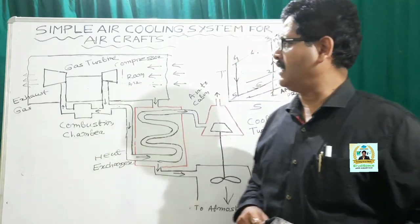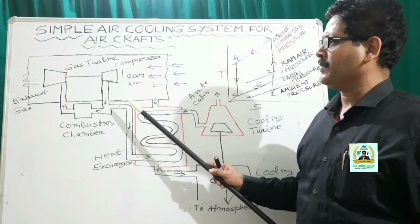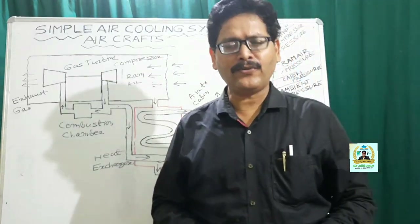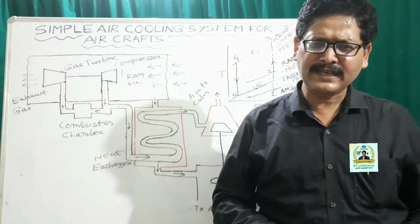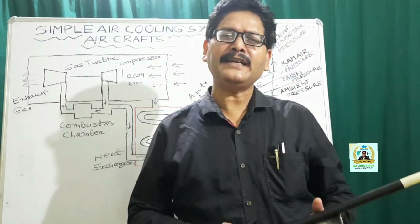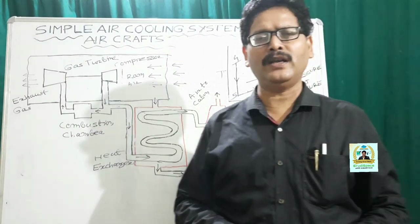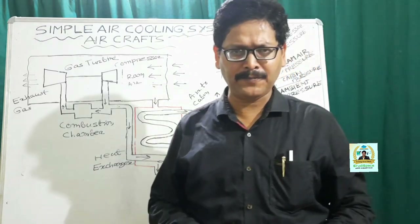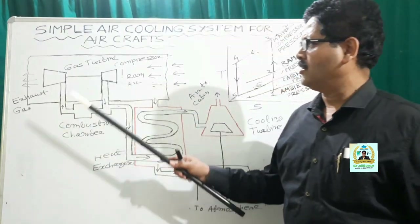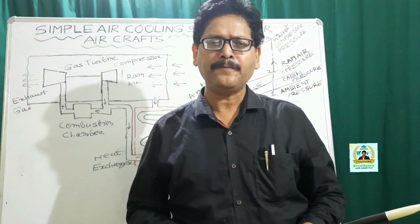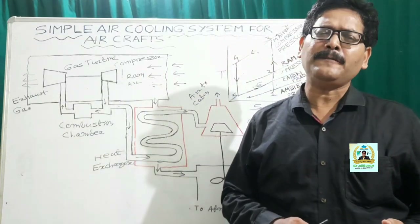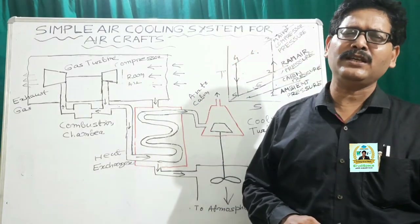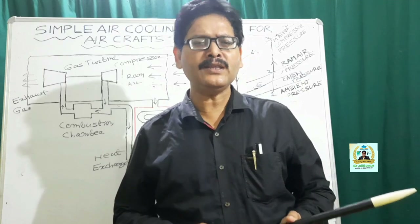The gas turbine cycle has a compressor, a combustion chamber, and a gas turbine. First, air is taken in and compressed in the compressor, then taken to the combustion chamber where heat and fuel are added. This develops a huge amount of thermal and pressure energy, which is then taken to the gas turbine where it undergoes expansion. Due to expansion, mechanical work is developed, and that is used to run the air plant.